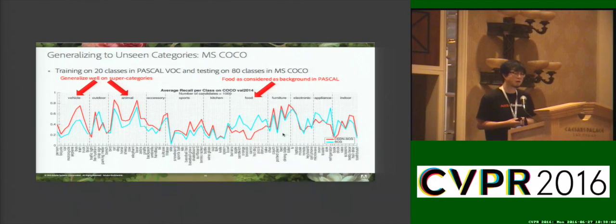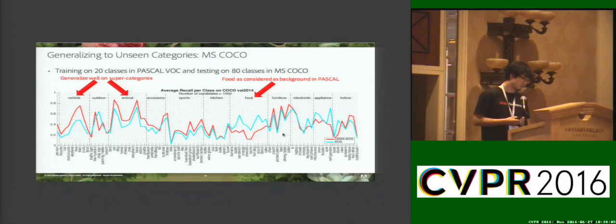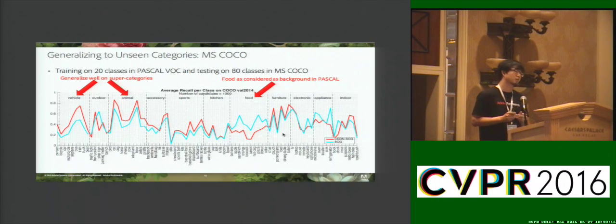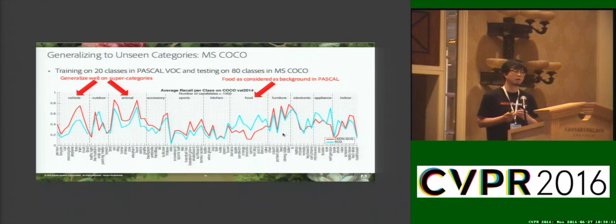We also test our algorithm on the Microsoft COCO dataset, on the validation set, comparing with the baseline algorithm. We observe that our algorithm can generalize well to unknown novel object classes that share the same supercategories with the training classes. For example, the algorithm was trained on horse and sheep, so it generalizes well to zebra and elephant.